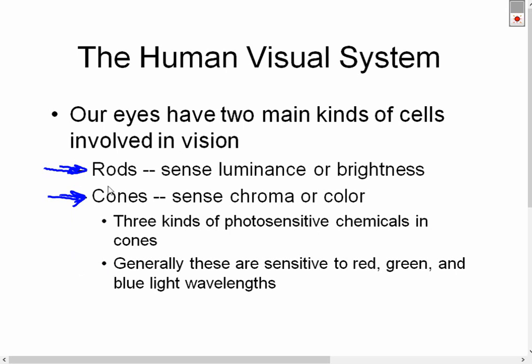Generally these cones are sensitive to specific colors such as red, green, and blue. In our visual system, we mix these colors together. We are sensitive to those colors, so the amount of light we're receiving in each of those color bands, we perceive as different colors because we mix them together.